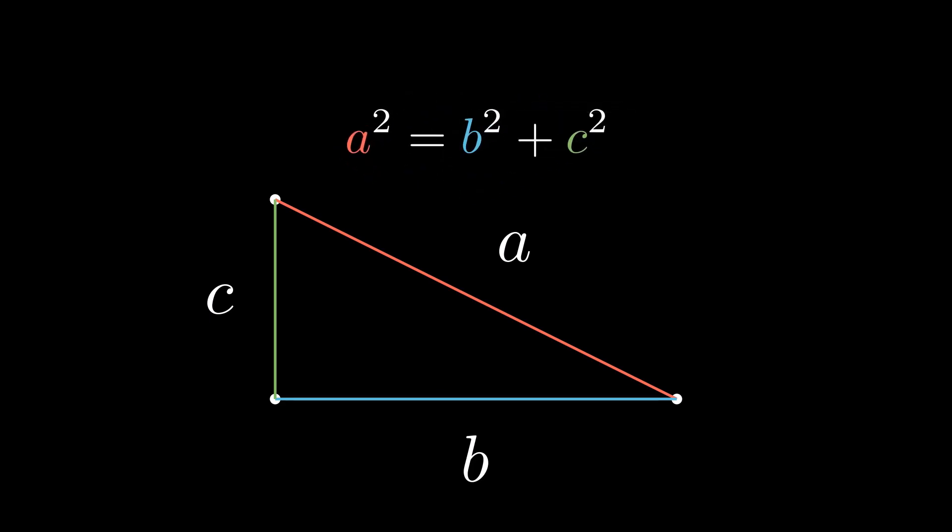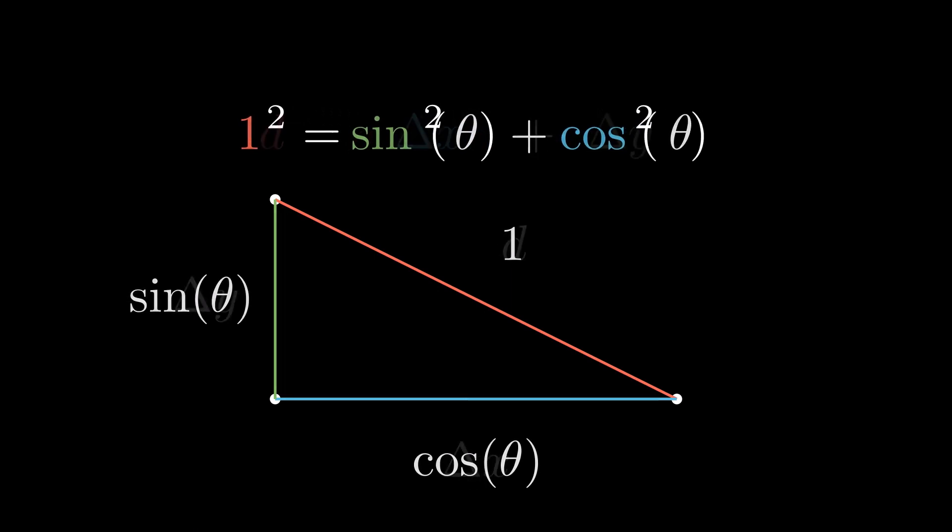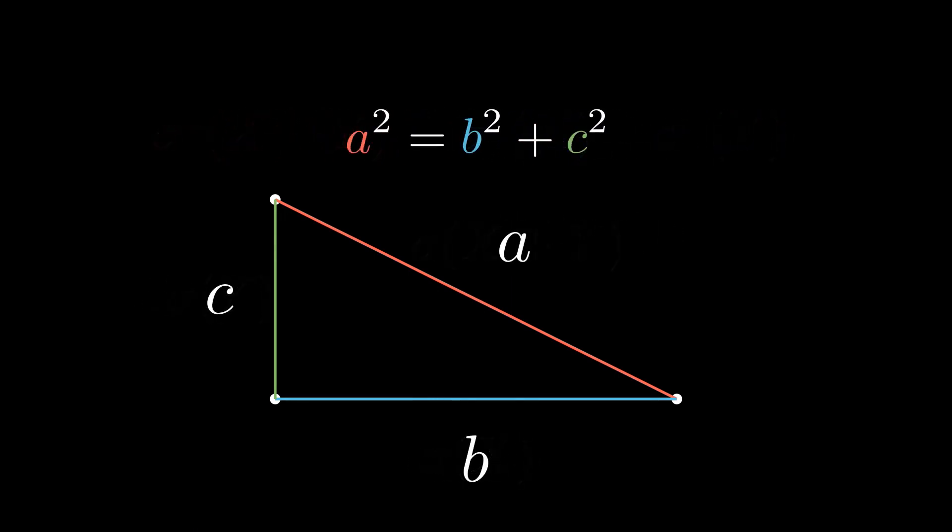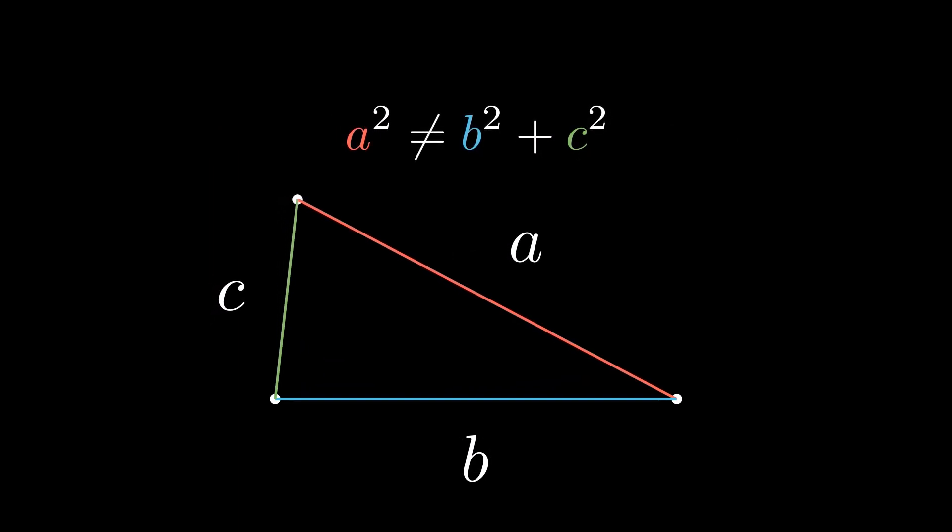This relationship has been known since ancient times and has proven exceptionally useful in everything from trigonometry, to the familiar distance formula, to even statistics. But the right triangle is only one specific type of triangle. And while the Pythagorean Theorem is useful, its applications are limited.